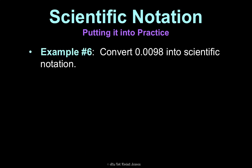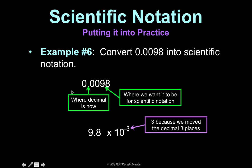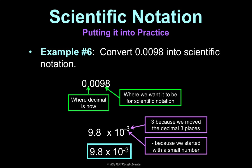Example number 6. Convert 0.0098 into scientific notation. So, first, here's my decimal. I want it to be here in scientific notation. So, I want it to be 9.8 times 10 to however many times I move it. If I'm going to move that decimal, I'm going to have to move it 1, 2, 3 times. Now, it's going to be a negative 3 because this is a small number. This is a number less than 1 that I'm starting with. So, that's why I'm going to make it negative exponent. That's your final answer.